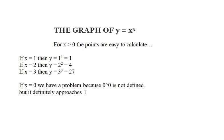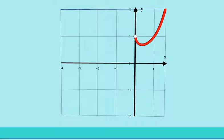I'm going to consider the graph of y equals x to the power x. For positive x values, the points are quite straightforward to calculate. If x is 0, there's a slight problem because 0 to the power 0 is not well defined, but it definitely approaches 1. So the ordinary graph so far is as follows, and here it is.